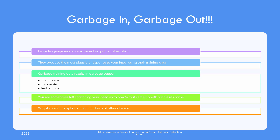Large language models, by definition, are just that — models. They are learning algorithms trained on public information. They try to come up with the most plausible response depending on various factors, but if the training data on a topic is garbage, it would give garbage as a response, resulting in incomplete, inaccurate, or ambiguous output.